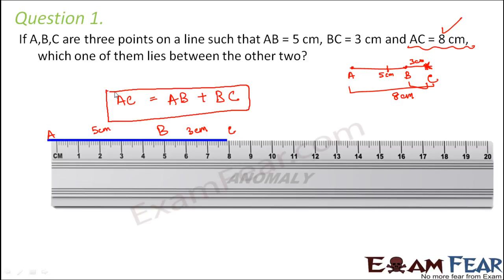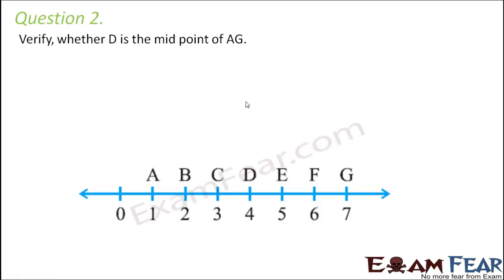Now, whenever you have a relation like this, let's say that if you have 3 points A, B, C on the same line such that AC is equal to AB plus BC, that itself, this relation itself shows that B lies between A and C. Look at the sequences. AB, BC. That means B is in between A and C. So if this relation holds true for any 3 points which are lying on the same line, that would mean that B is the midpoint. B is lying between A and C.